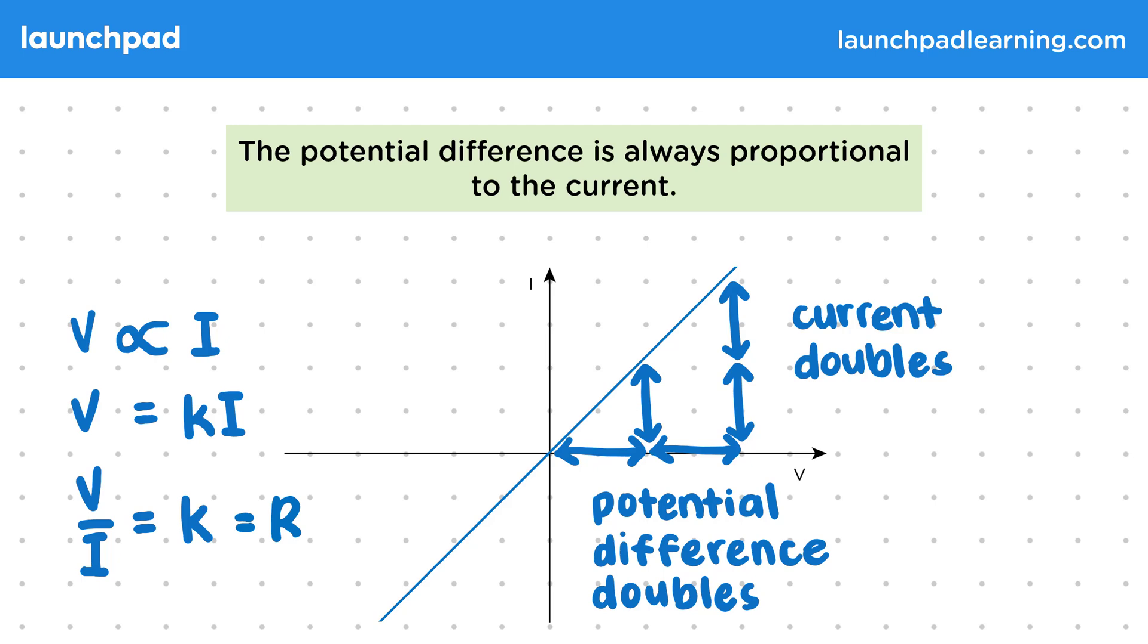Make sure you understand that here R is only a constant value because we're looking at an ohmic conductor with a straight line IV graph.